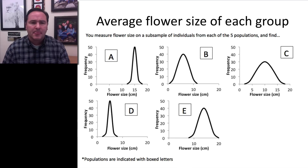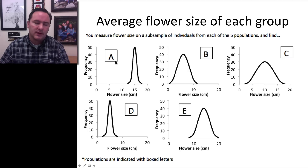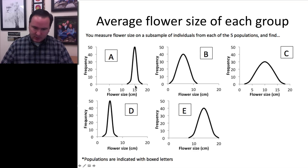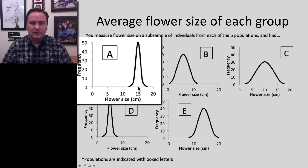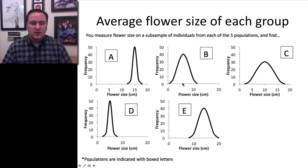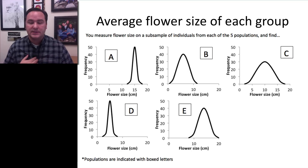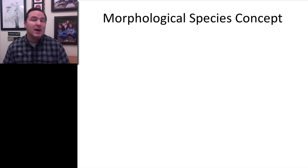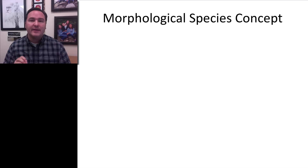First, look at this graph of the average flower size of each group. Flowers A, B, C, D, and E all have different flower sizes. Flower A averages around 15, flower B around 7, and so forth. If they're different-sized flowers, is that enough evidence to suggest they're different species?